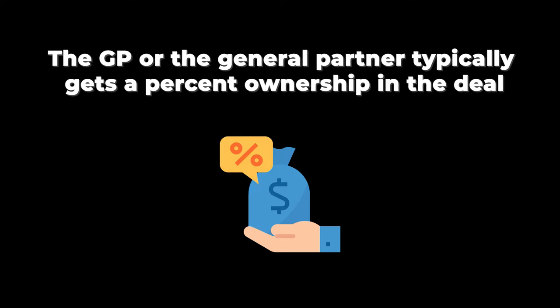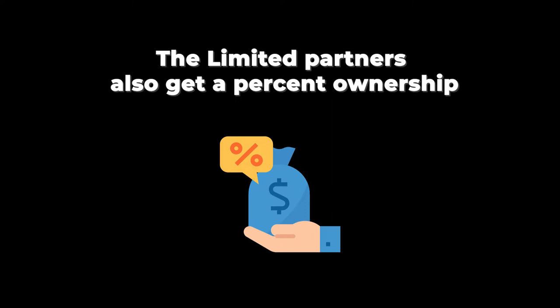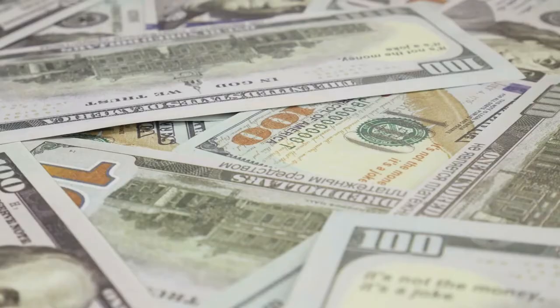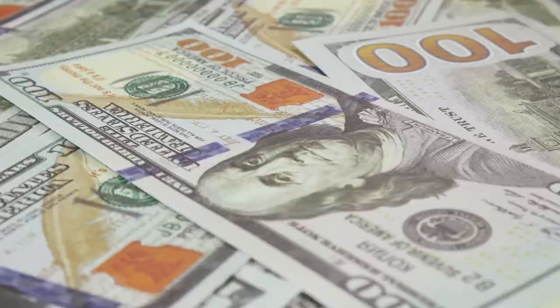In exchange for running the deal and executing everything, the GP typically gets a percent ownership in the deal. The LPs also get a percent ownership in exchange for providing the capital required. There are a bunch of different ways to structure the splits, but at a high level, typical splits may range from 70/30 to 80/20 in favor of the limited partners. Sometimes you might see 60/40 or even 50/50. It can get quite complicated, but the key point is that the limited partners and general partners split ownership in the deal — that is the value each party provides.